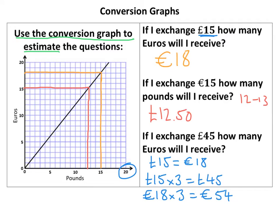I'll just circle that answer — 54 Euros. If a value is off the graph, you're going to have to read off a number that is on the graph and then multiply it up to get your answer. So there you go — conversion graphs, no more difficult than that.